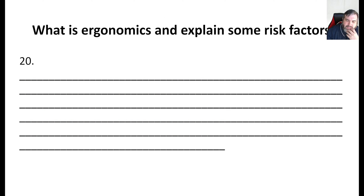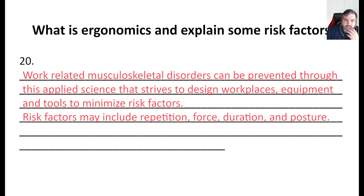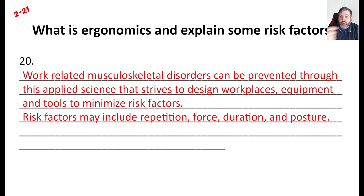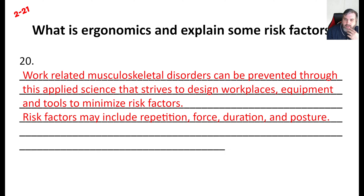What are ergonomics? Ergonomics is actually a science — an applied science through which work-related musculoskeletal disorders can be prevented. Risk factors include repetition — like assembly line work doing the same motion over and over, or carpal tunnel from a computer mouse — as well as the force of an incident, the duration, and the posture. All of these are things you need to be aware of inside your workplace.